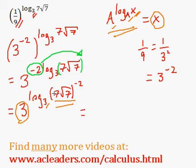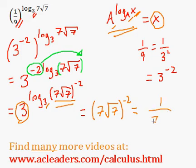And the x here, in this case, is 7 root 7 to the power of negative 2. And I'm just going to quickly simplify this. That's going to be 1 over 7 root 7 squared.